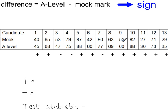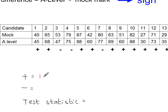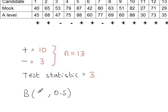If you find any of these values were exactly the same — same mock, same A-level — you can cross off that particular student and pretend that student does not even exist in your data. Now summarize this data: count the number of plus signs and the number of minus signs, and the lower of these two will become the test statistic. The N-value in the binomial distribution will be the sum of these two, 13. The test statistic is the lower of these two, which is 3.